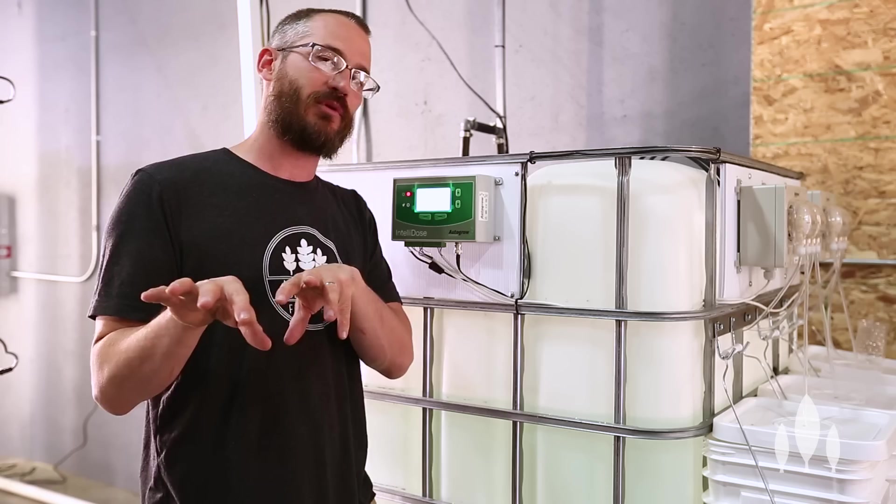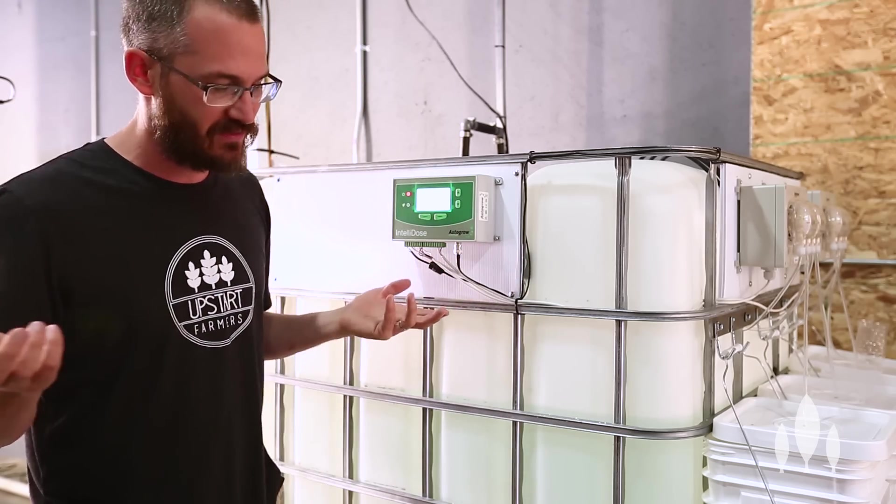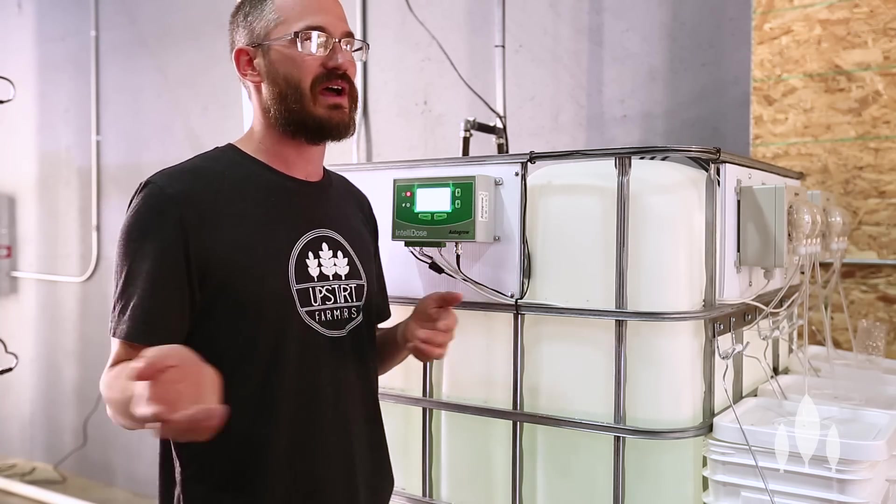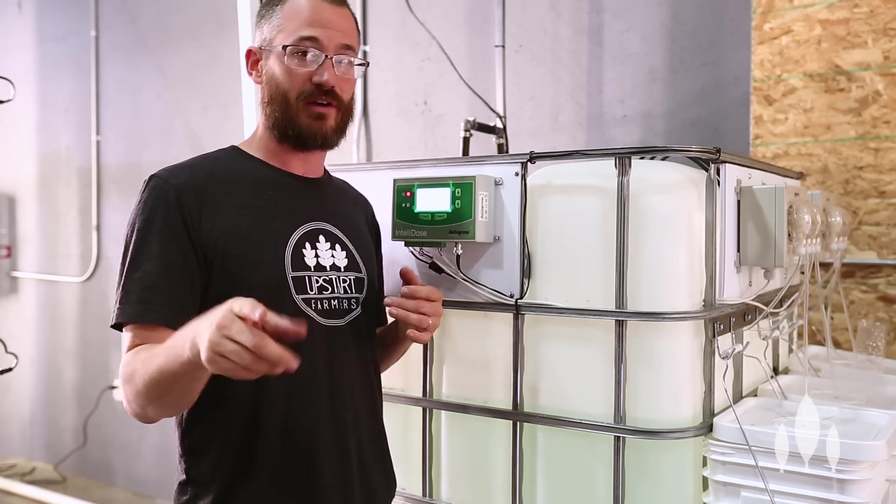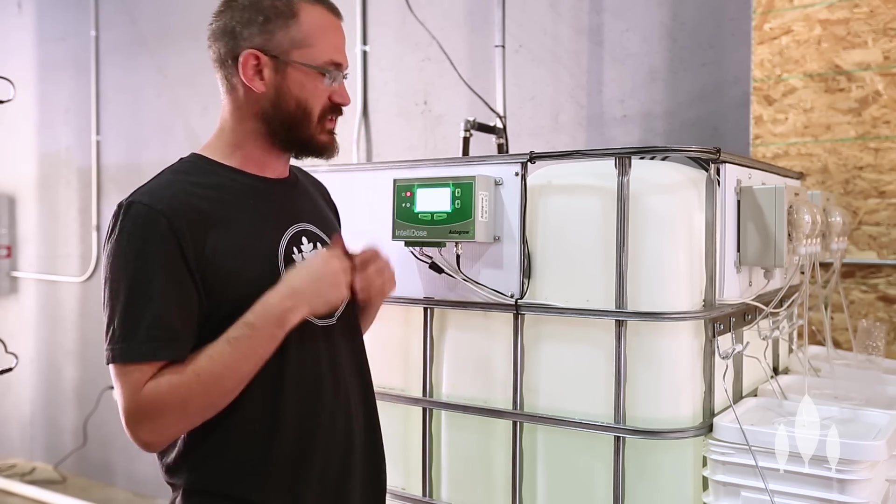So if you're an aquaponic producer, you're probably looking at this saying, Nate, this is crazy. I don't dose EC, but you do dose pH, and you also dose iron, right? So with a system like this, you can set it up so it automatically doses your iron on a set schedule.